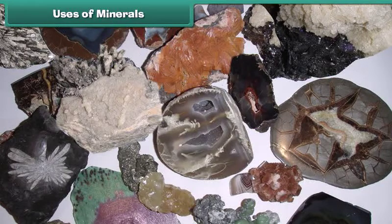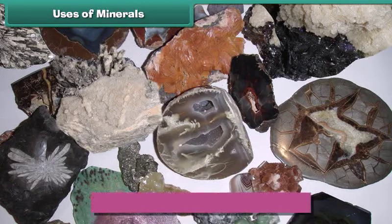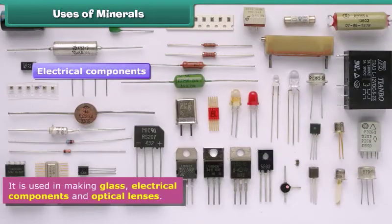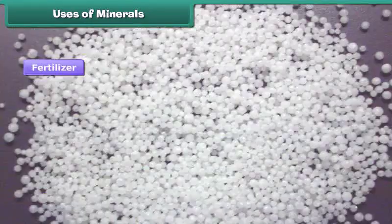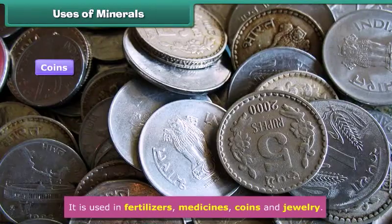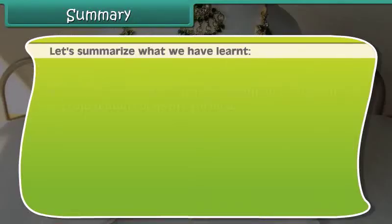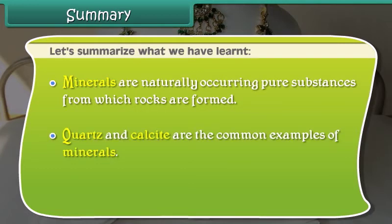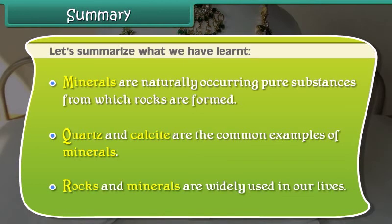Uses of minerals: minerals play an important role in our lives. Minerals are used in the production of cement, and in making glass, electrical components, and optical lenses. These are also used in fertilizers, medicines, coins, and jewelry. Minerals are naturally occurring pure substances from which rocks are formed. Quartz and calcite are common examples of minerals.